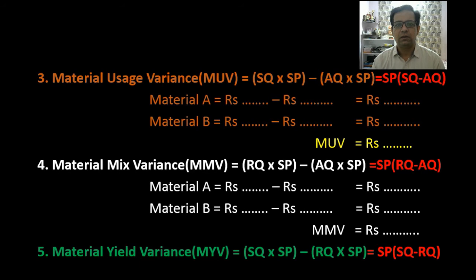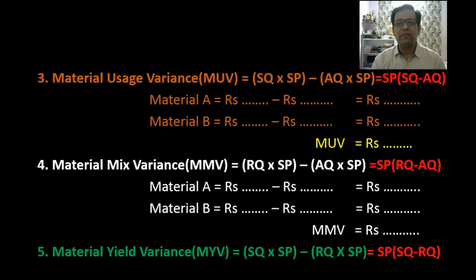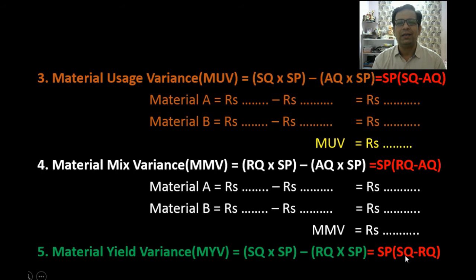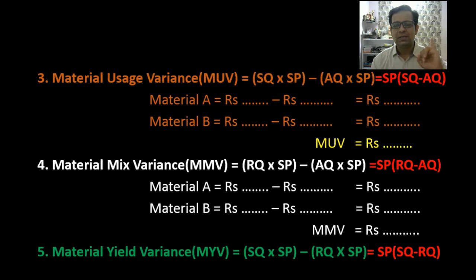The fifth variance is Material Yield Variance (MYV) — the result we get out of production. It is the difference between standard quantity and revised quantity, multiplied by standard price. Formula: SQ × SP minus RQ × SP, with short formula SP × (SQ − RQ). Looking at variances 3, 4, and 5 together: standard price is common to all three, and the three items — standard quantity, actual quantity, and revised quantity — just keep changing across the formulas.